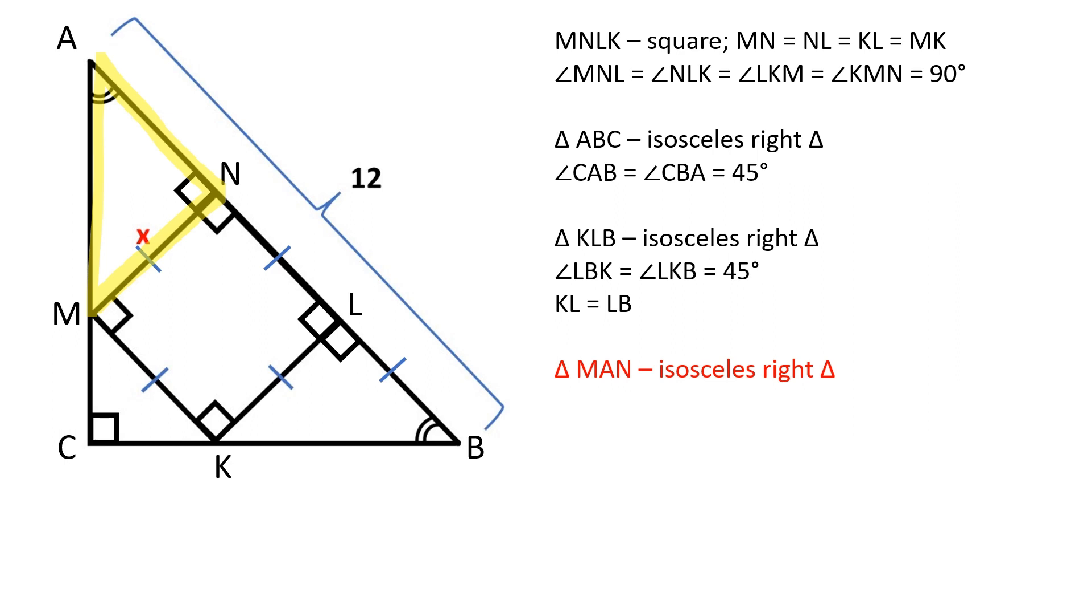it's an isosceles right triangle, since angle MAN is equal to 45 degrees, angle AMN is also equal to 45 degrees, therefore AN is equal to MN and equals X. As we can see AB is divided into 3 equal